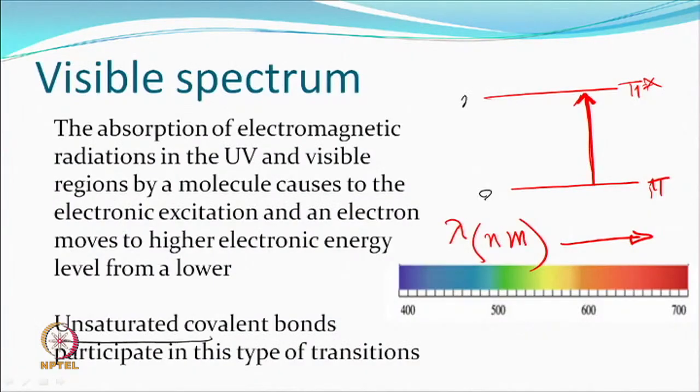One thing you probably know is optical whitening agents — they are colourless, but they absorb in the ultraviolet region. While the electron comes back to a stable state, the energy released is in the visible range, and therefore you see the brightness. So unsaturation helps, and most of these chromophores would have unsaturation.